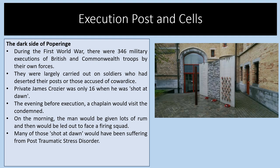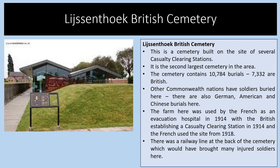There is a dark side to Poperinghe during the First World War: there were 346 military executions of British and Commonwealth troops by their own forces, largely carried out on soldiers who had deserted their posts or those accused of cowardice. For example, Private James Crozier was only 16 when he was shot at dawn. The evening before execution a chaplain would visit, and on the morning the man would be led out to face a firing squad. Many of those shot at dawn would have been suffering from mental illnesses including post-traumatic stress disorder — reflecting the very different understanding of mental health that existed during the First World War.